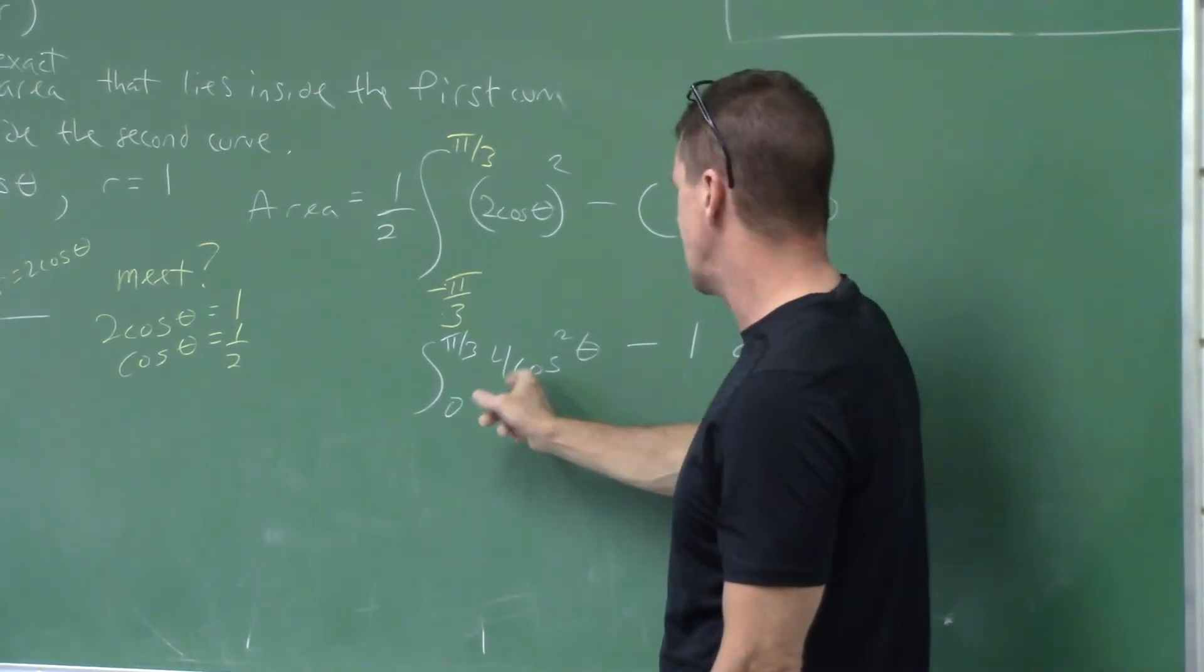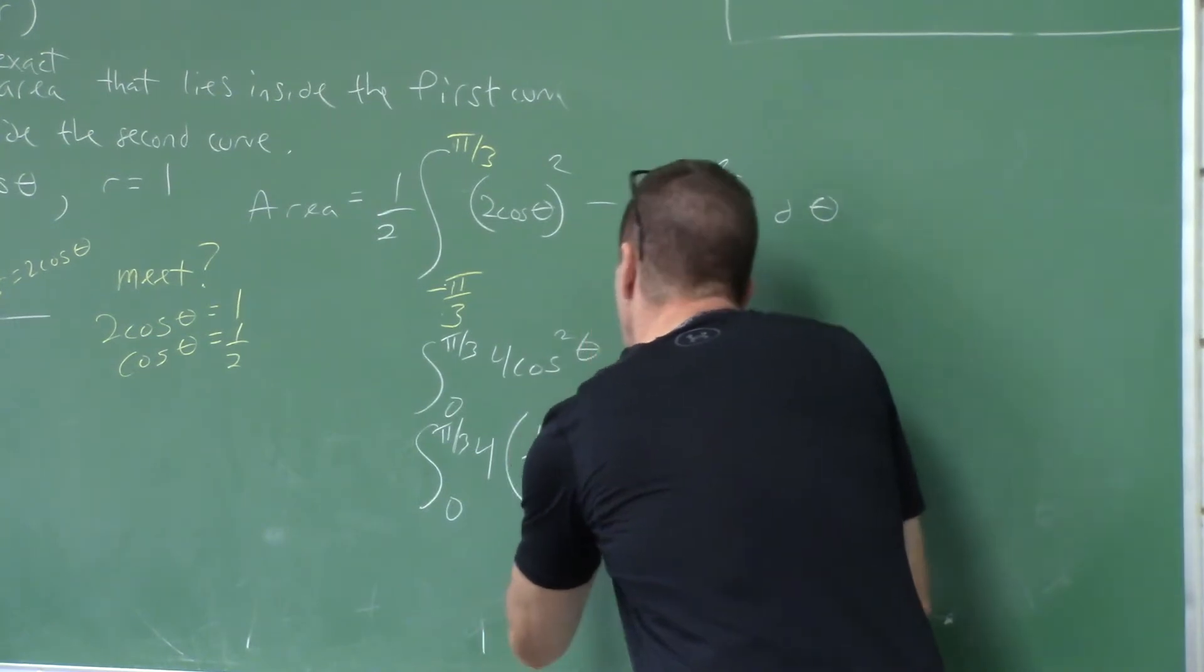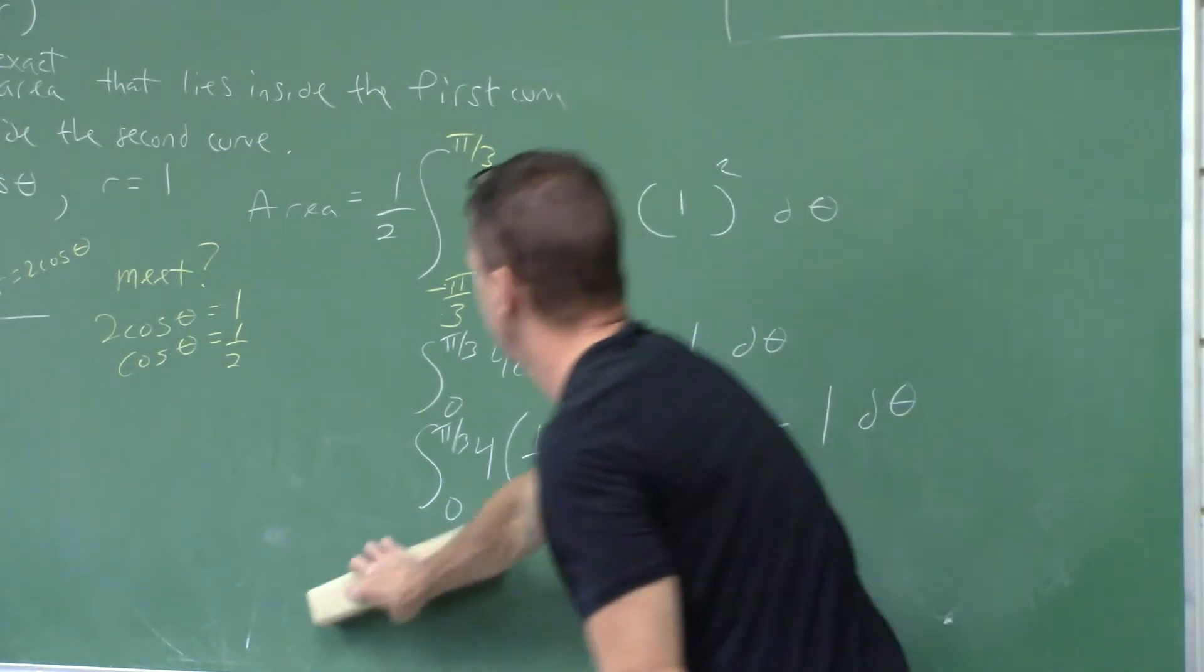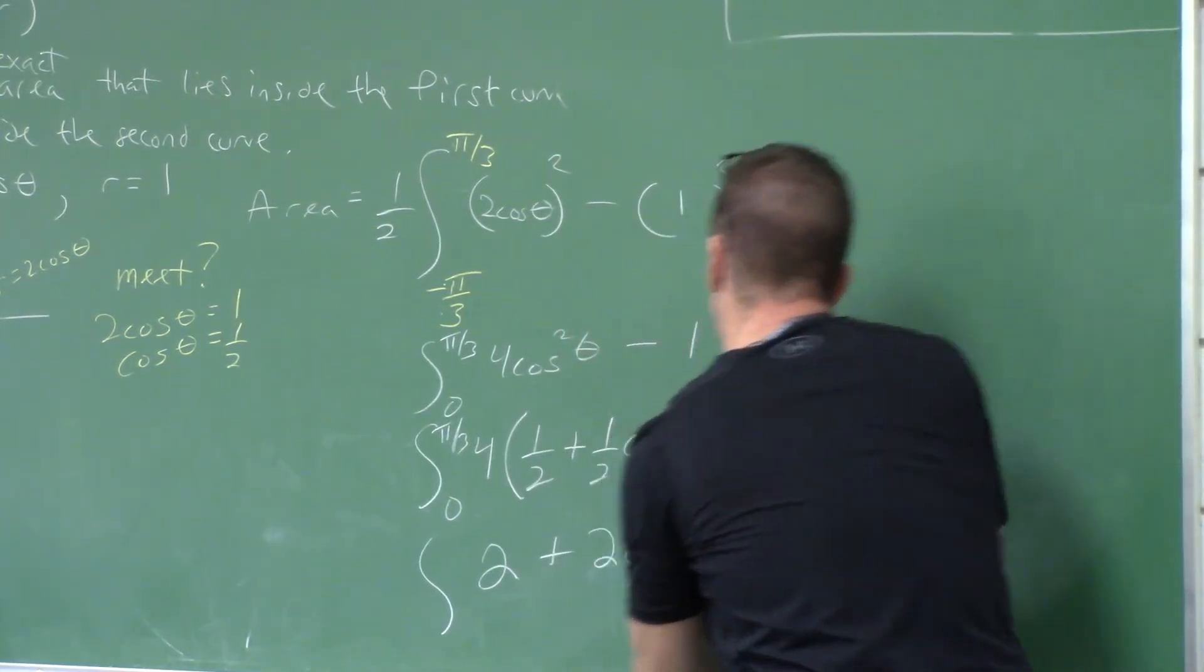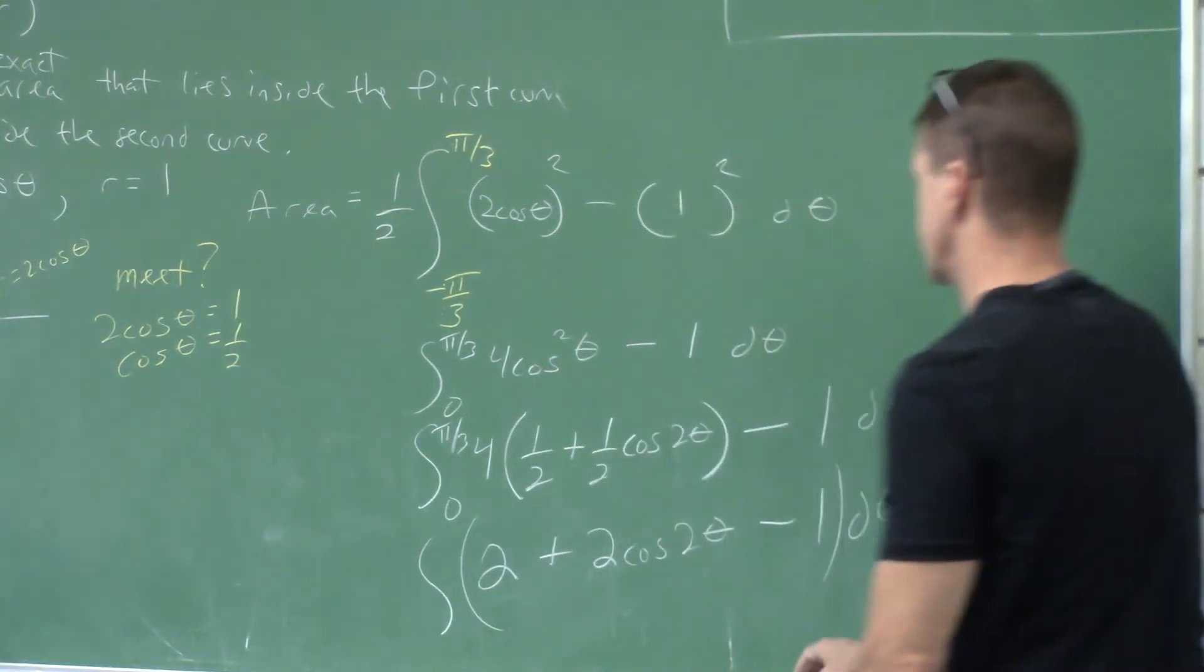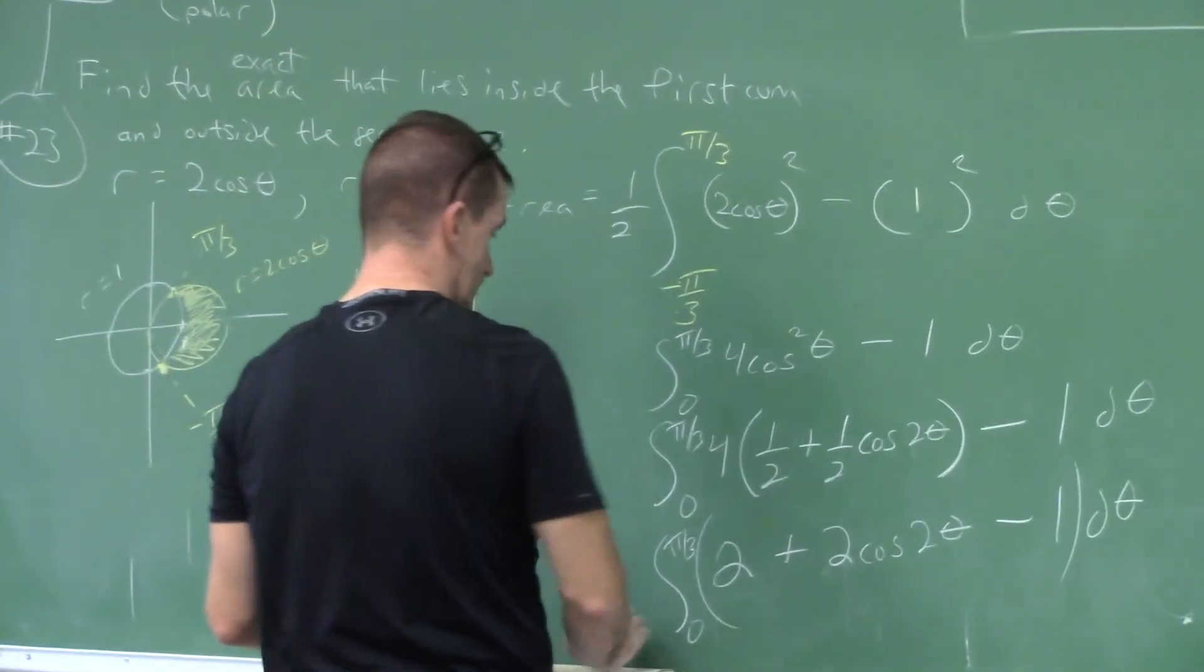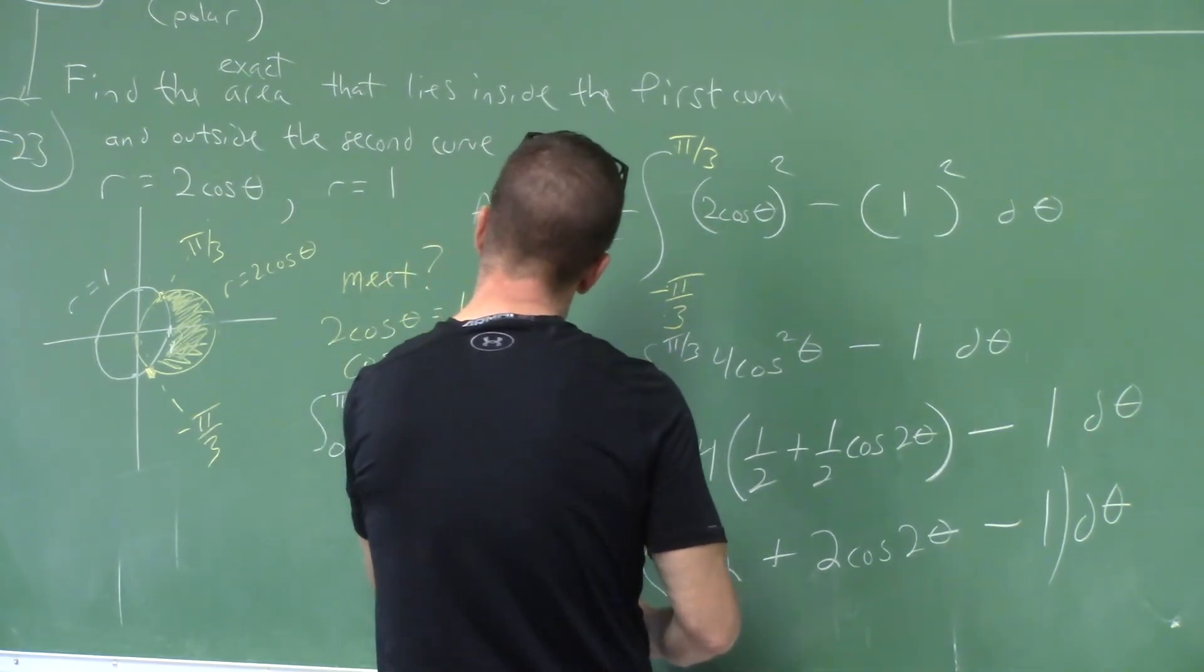I can't factor a number out this time. What's that trig identity? Four times one half plus one half cosine of two theta, but you still have a minus one. You want to distribute that now? Four times a half is two plus two cosine two theta minus one. You see any like terms in there? What's two minus one? One. I have the integral from zero to pi over three of one plus two cosine of two theta d theta.